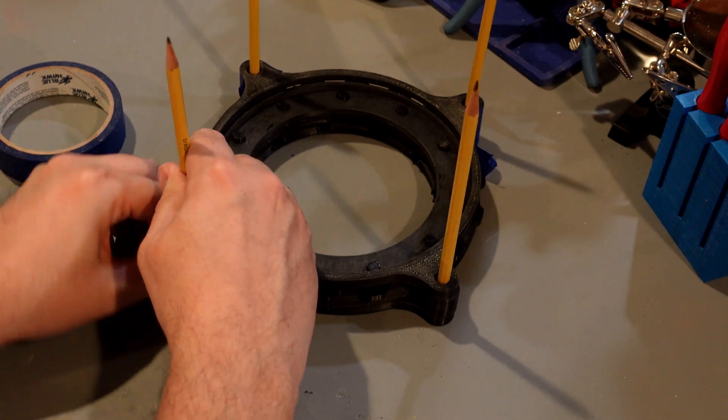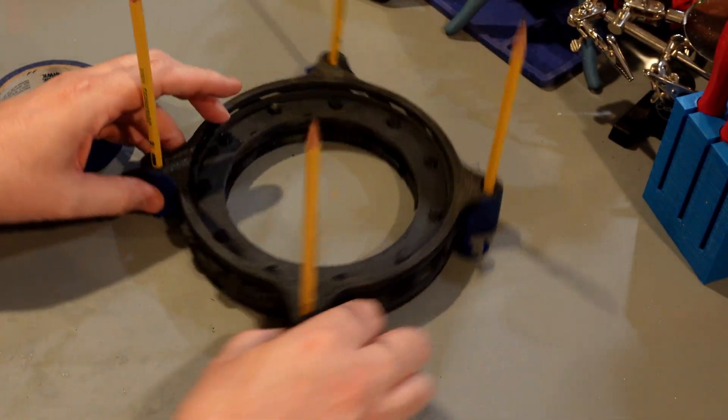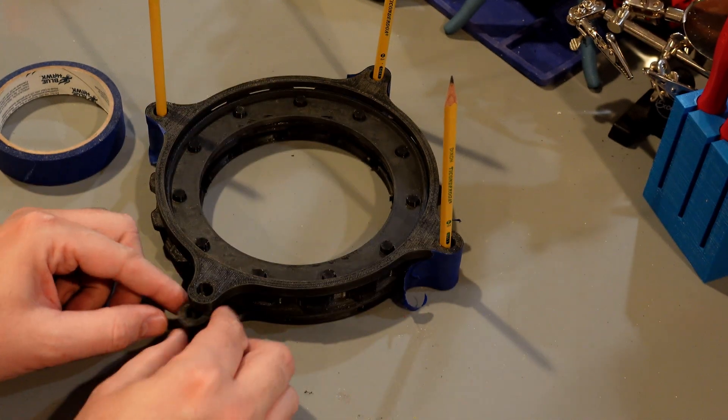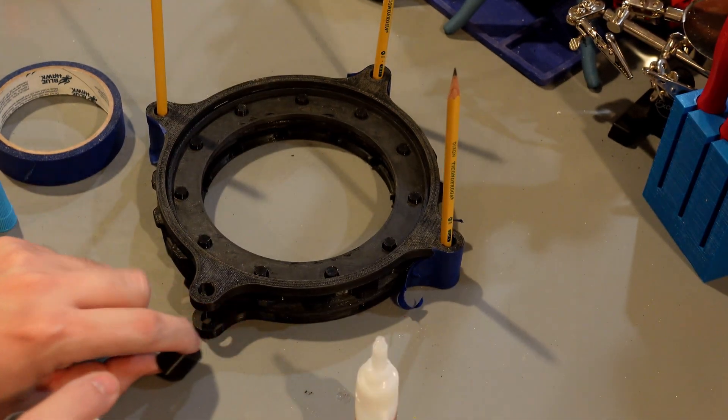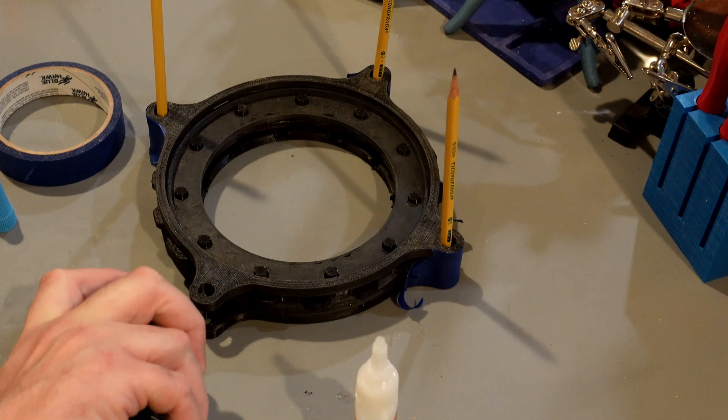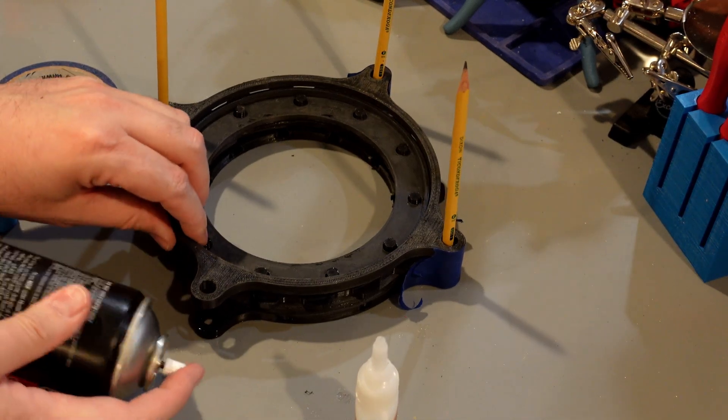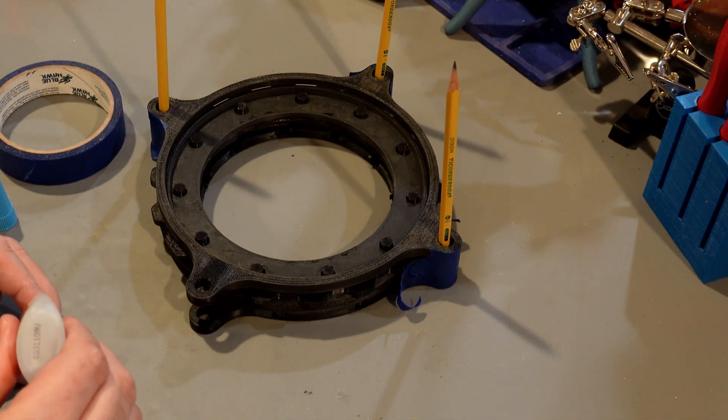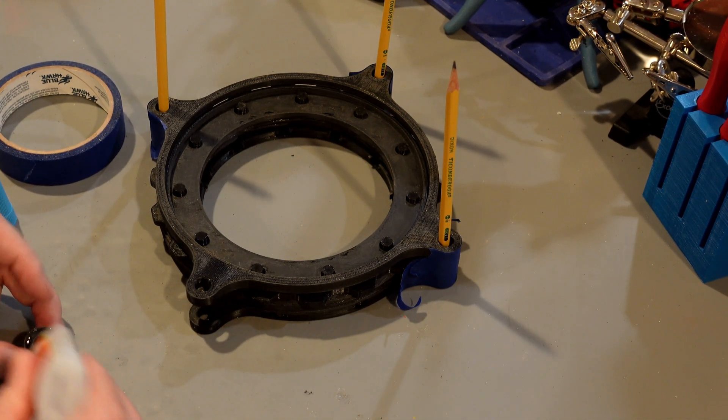Don't try to do this freehand. You're going to mess the thing up if you're using super glue. Now we're going to start gluing. We're going to glue this into place. There's our super glue accelerator. If you don't use that stuff and you use CA glue, you need to use it. That stuff's amazing.